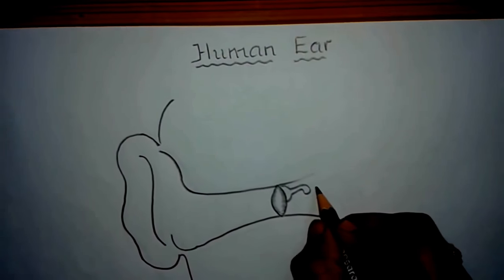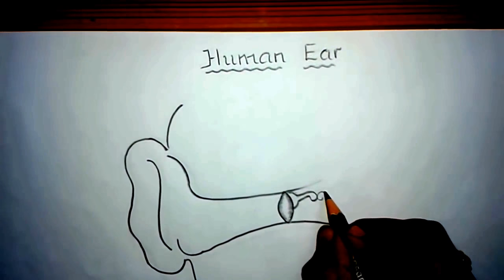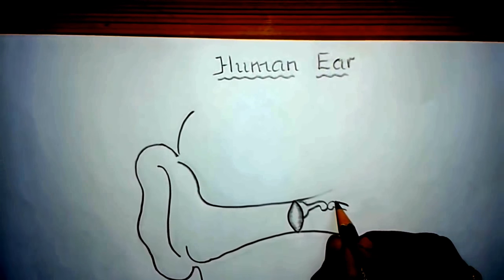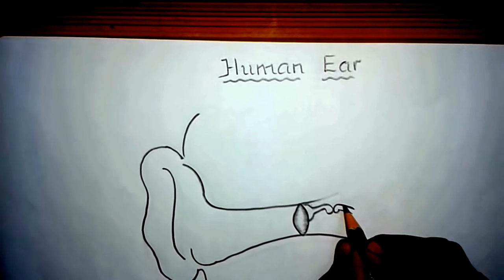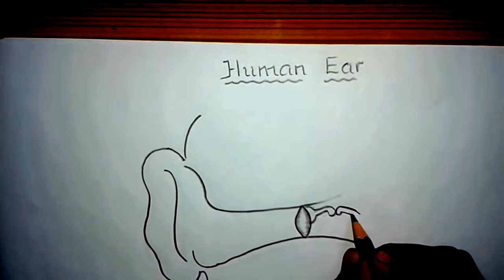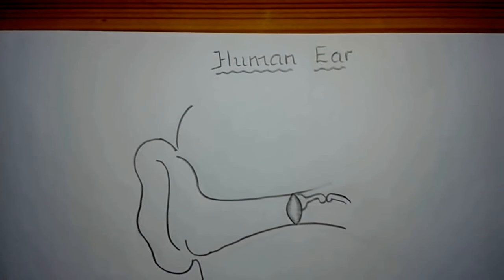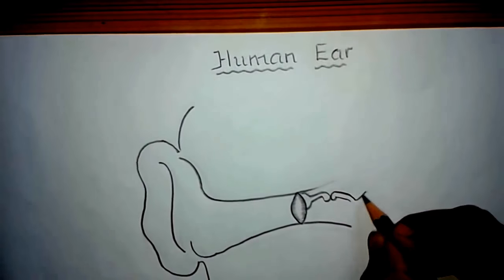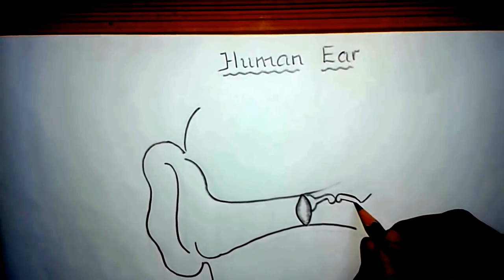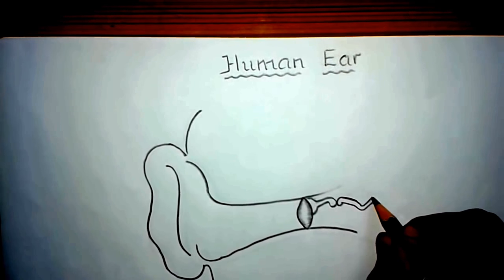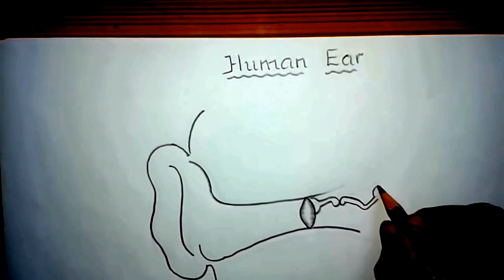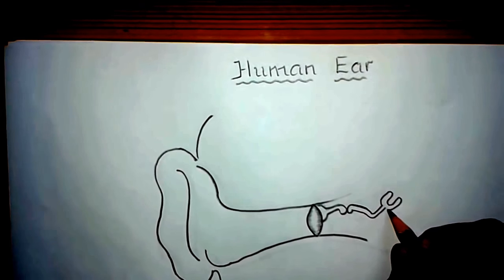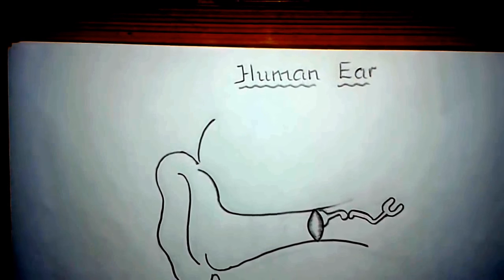The second small bone of the middle ear is the incus, which is just opposite to the malleus. So draw the structure like this. The third small bone is called the stapes, also called the stirrup. Draw the third smallest bone of the middle ear like this.